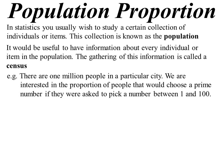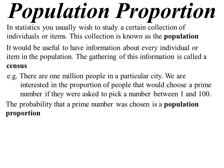Anyway let's look at this example. One million people in a particular city. We're interested in the proportion of people that would choose a prime number if we were to ask them to pick a number between 1 and 100. The probability that a prime number was chosen is the population proportion. So the proportion of the population that picks the prime number. 25 over 100 is the probability of a prime number. There are actually 25 prime numbers. I don't know if you realize that a quarter of the numbers from 1 to 100 are actually prime numbers. That would be the probability of getting one.